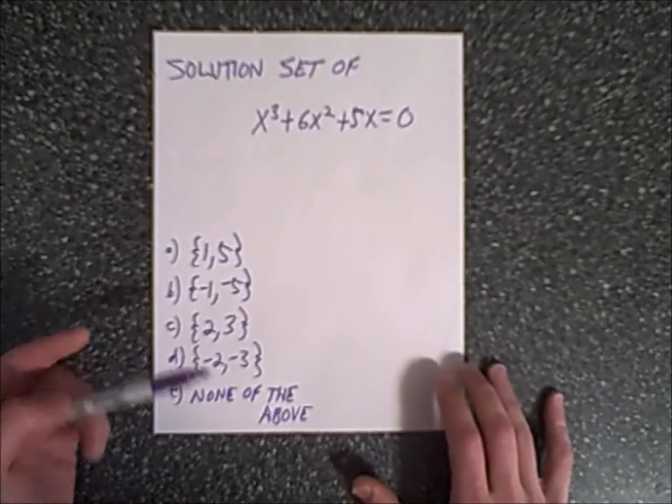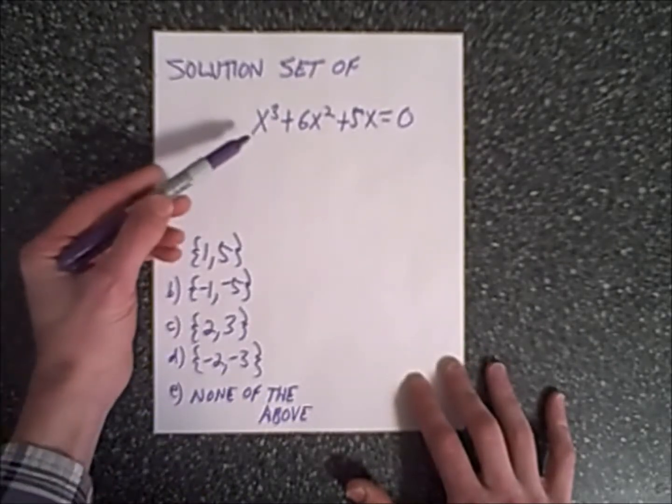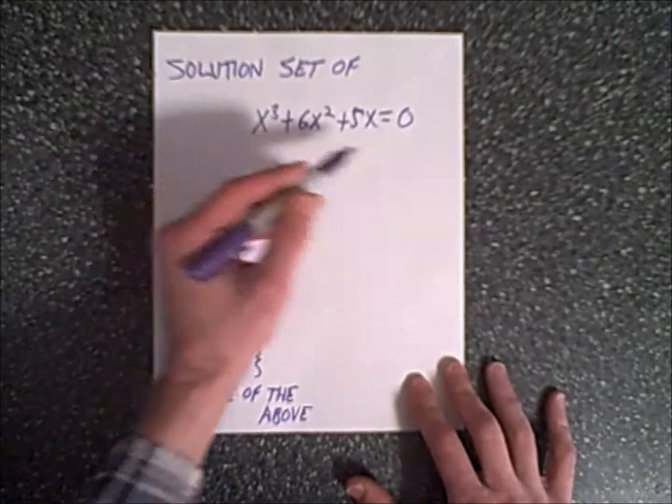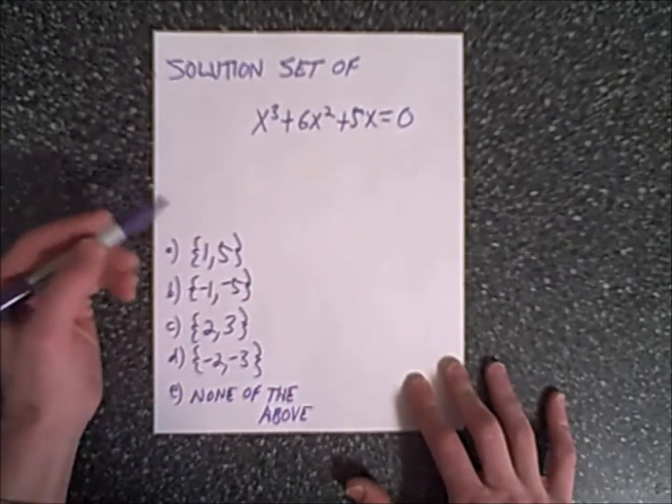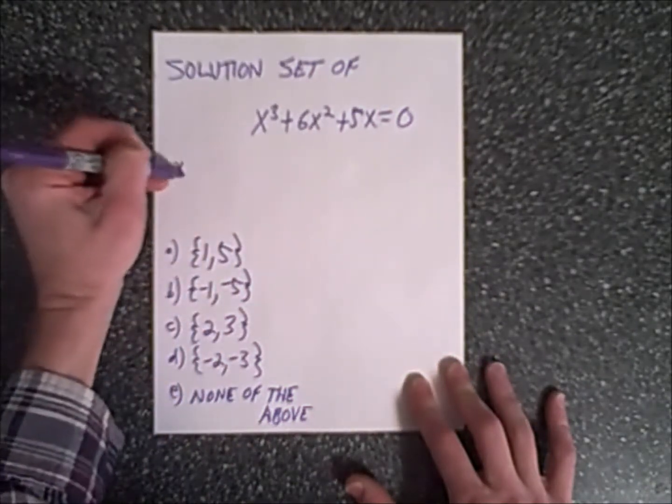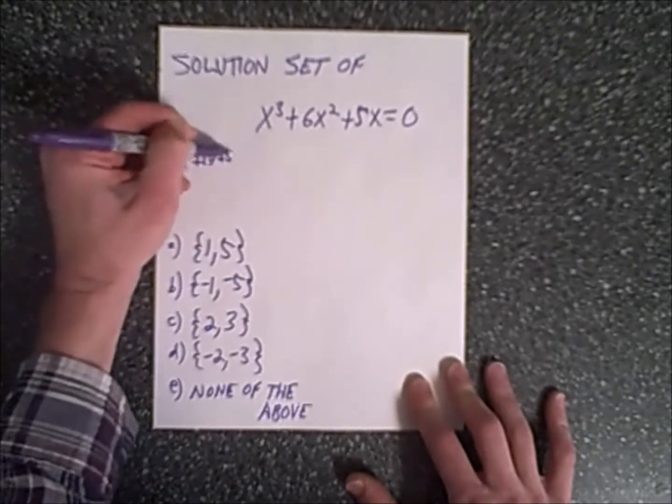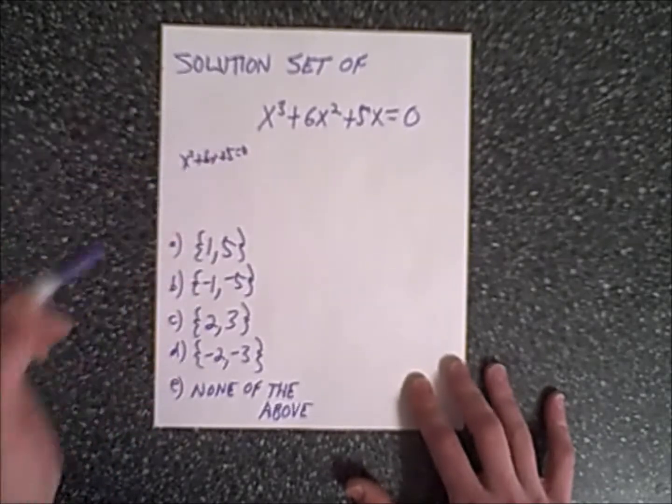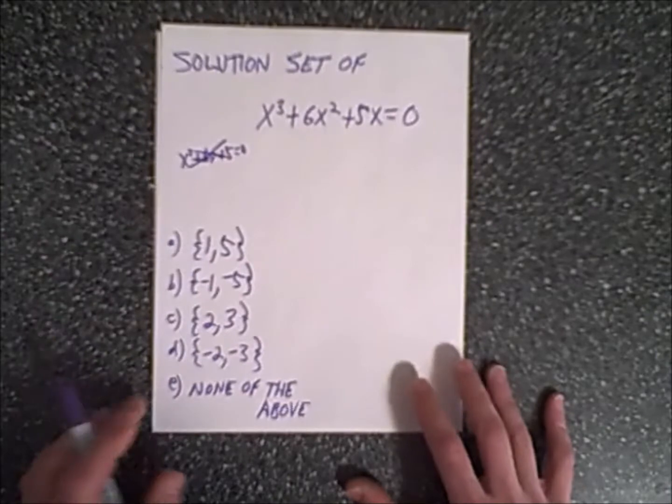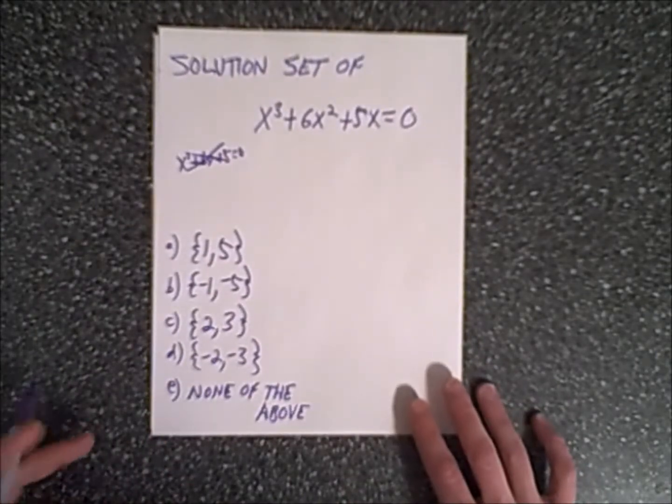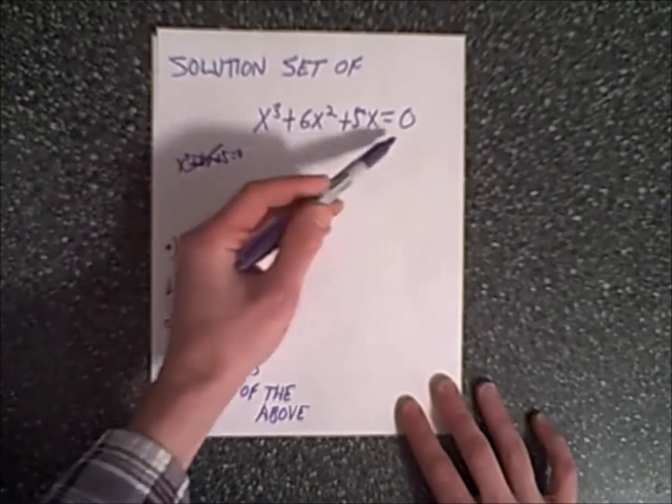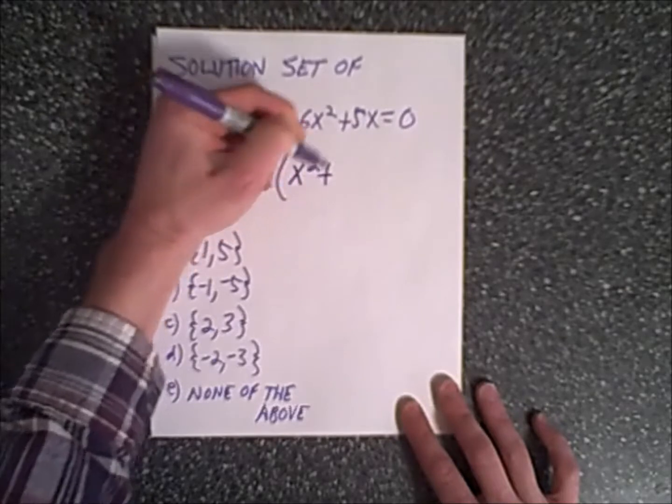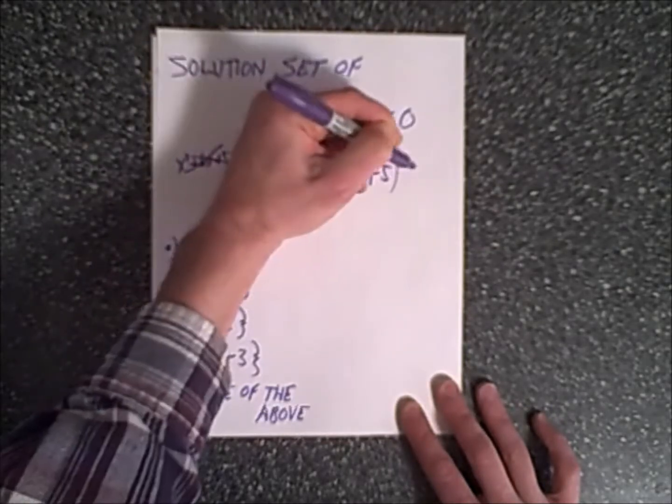The first thing I want to note is do not make the mistake of dividing this whole thing by x, because what will happen is if we were to divide both sides by x, we would lose one of our answers. We would end up with x squared plus six x plus five equals zero. Then when we factor it, we would end up with two answers but lose one of our solutions. So do not divide both sides by x. What we want to first do is find the greatest common factor, which as we'll see is x. So we have x times the quantity x squared plus six x plus five equals zero.